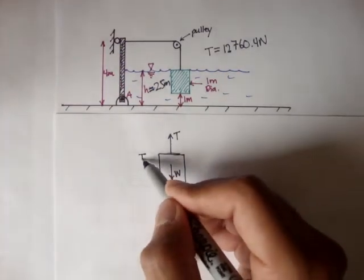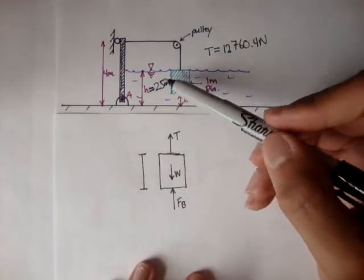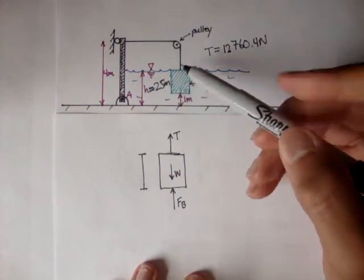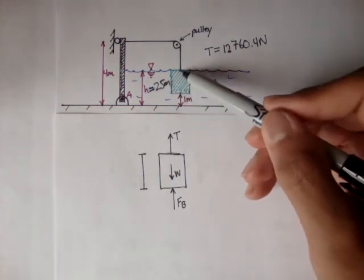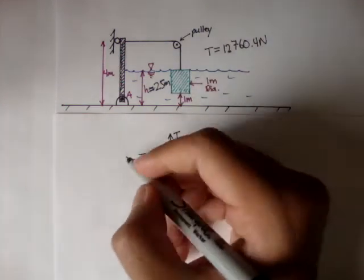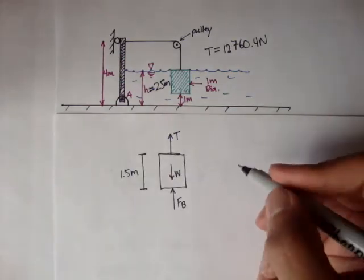Remember we said this distance, well we didn't say, but we can figure out that since this is 2.5 meters high, the water, and this is 1 meter above the ground, we can say 2.5 minus 1 is the height of the block, which is 1.5 meters.